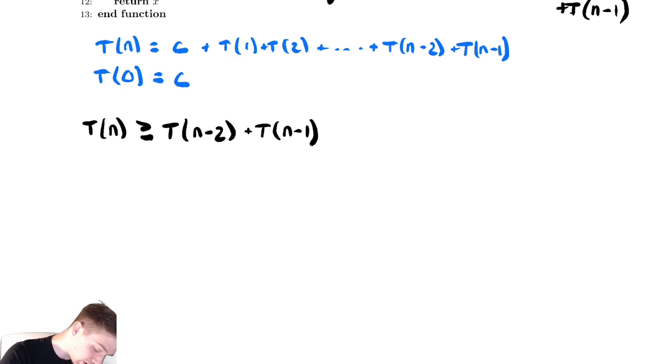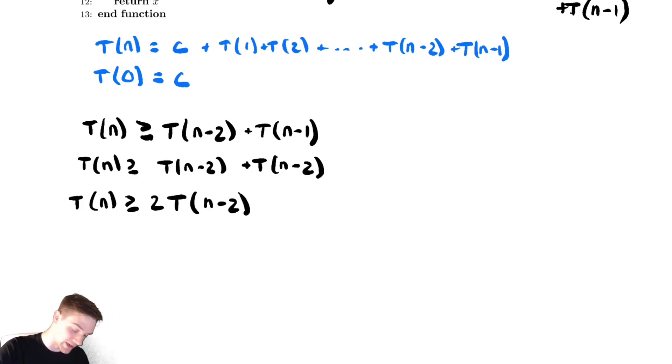I'm then going to keep the smaller of the two and replace the larger of the two with the smaller of the two. Which gives me t of n greater than or equal to two t of n minus two.